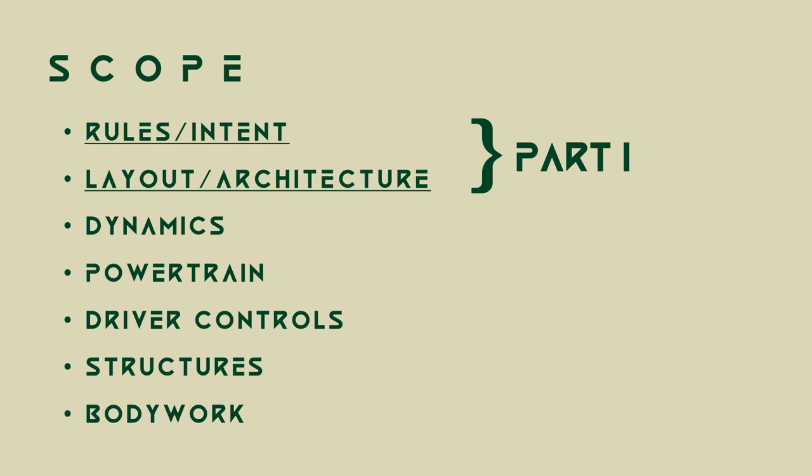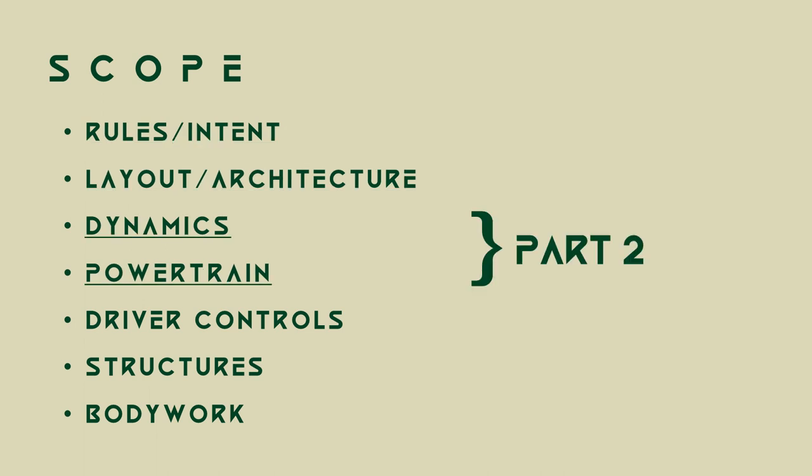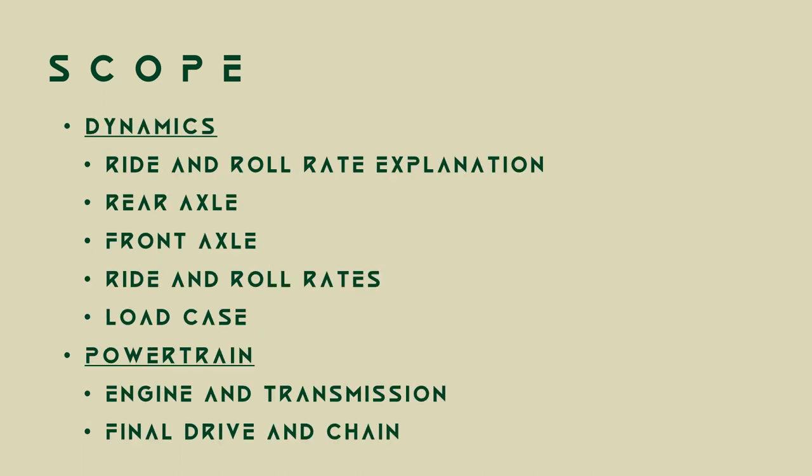In part one we looked at the rules and the overall concept layout. I spoke at length about steering geometry and effort, and in this video I'll put numbers to my design. In this part we'll be looking at vehicle dynamics and the powertrain. Under vehicle dynamics: high level spring rate explanation, rear geometry, rear axle sizing, front steering geometry, front inboard geometry, rockers, ride and roll rates, dynamic wheel loading, tuning sensitivity, and a look at the load cases. For powertrain, a basic look at the engine, selecting gear ratio and chain pitches.